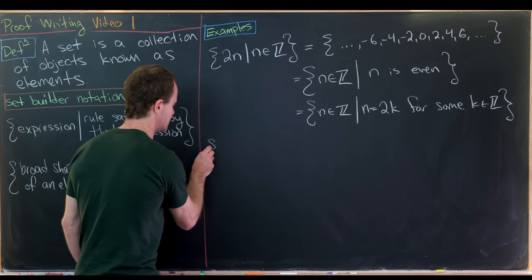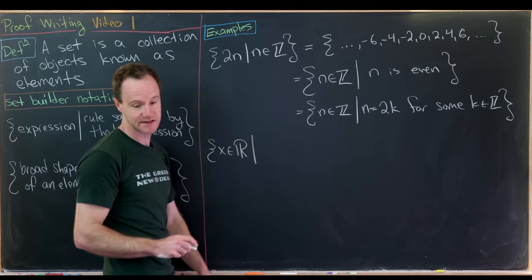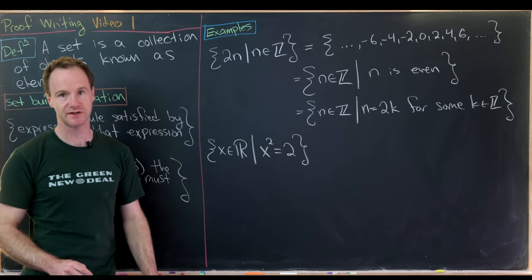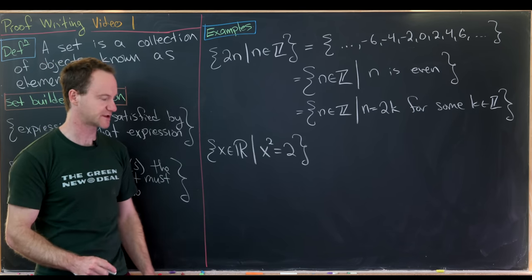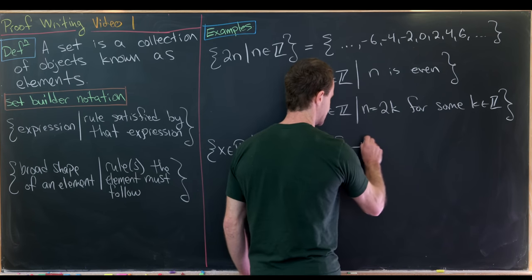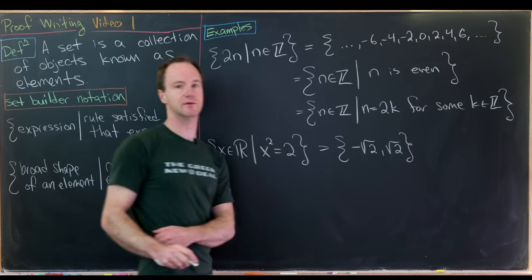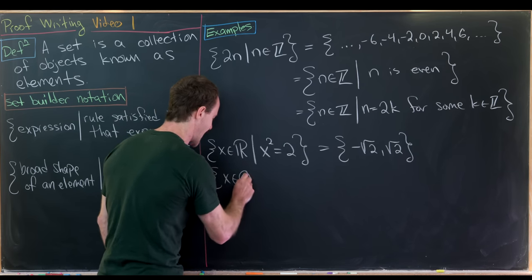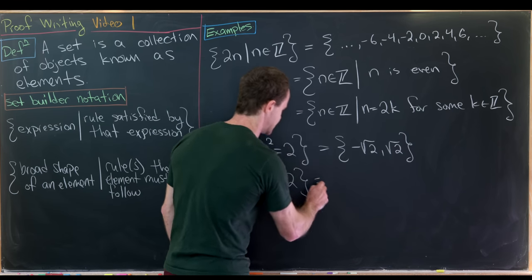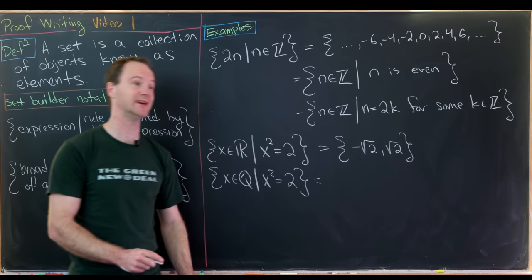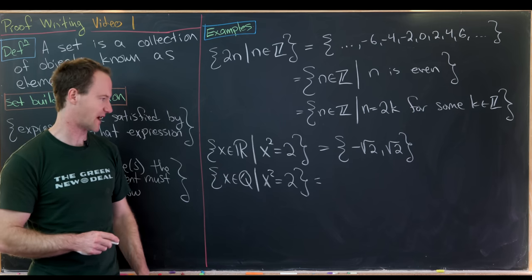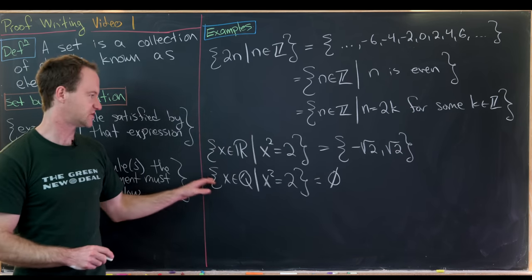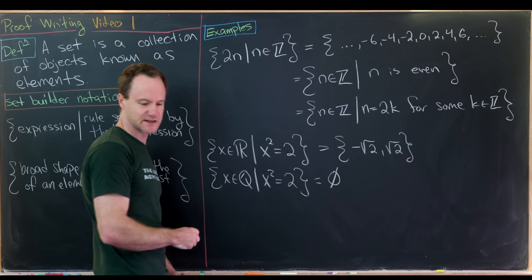Let's look at the set of all real numbers x such that x² = 2. That's all solutions to the polynomial equation x² = 2, which from pre-calculus we know are -√2 and +√2 — a set containing two elements. What about the set of all rational numbers x such that x² = 2? Famously √2 is not rational, so no rational number satisfies this. That means we have the empty set — a fancy way of writing it.